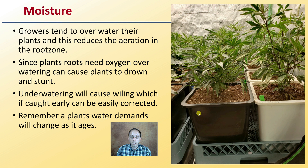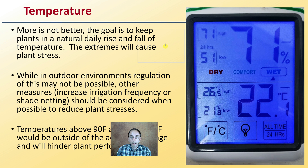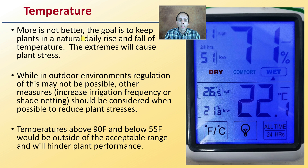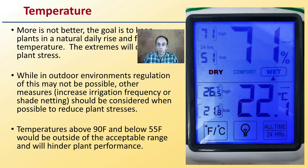Then we get to temperature. When looking at different temperatures, more is not better. The goal is to keep plants in a natural daily rise and fall of temperatures. Extremes will cause plant stresses. While outdoor regulation may not be possible, measures such as increased irrigation frequency or use of shade netting should be considered to reduce plant stresses. Keeping a 24-hour monitor of high and low temperature and humidity is a great suggestion. Temperatures above 90 degrees Fahrenheit and below 55 degrees Fahrenheit will be outside the acceptable range and will hinder plant performance overall.